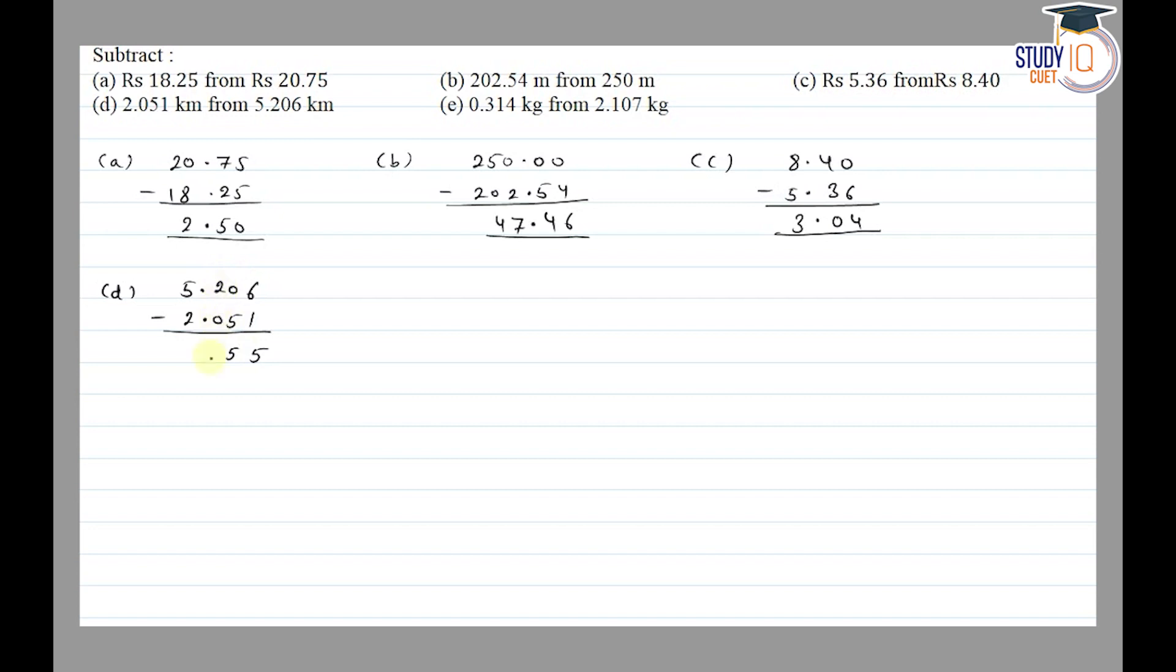Part (e) is 2.107 and 0.314 subtract. So 2.107 minus 0.314.